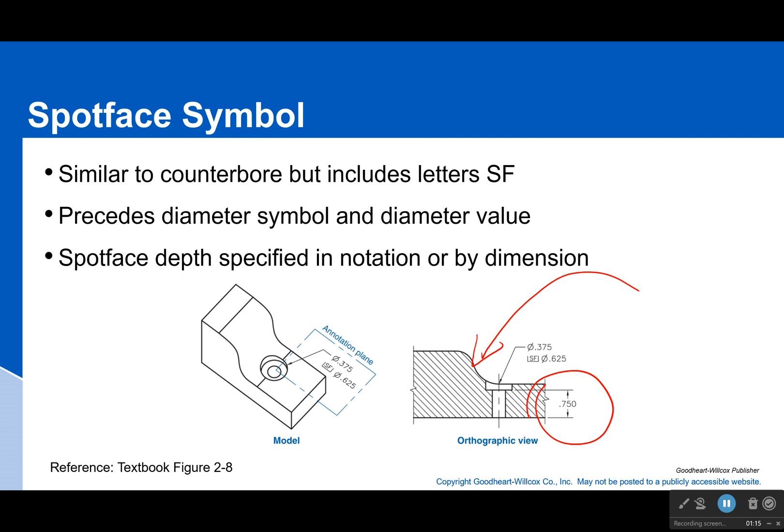This is to allow a fastener to have a nice flat surface to attach to. For example, if I have that curved surface and I try to put a nut on top of this or a bolt head on top of this, well, it's going to be offset and I have this big gap right here. But if I then put a spot face in it, cut it out like this, then my fastener can lay flush against the surface.